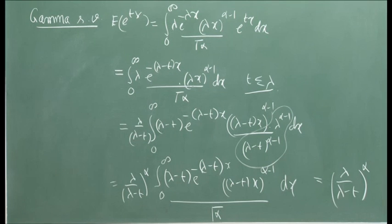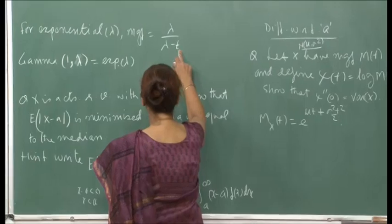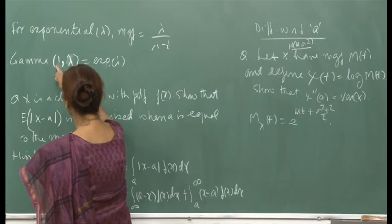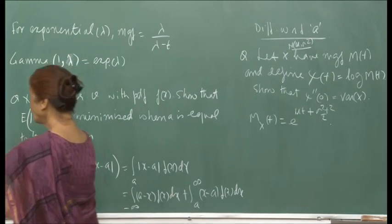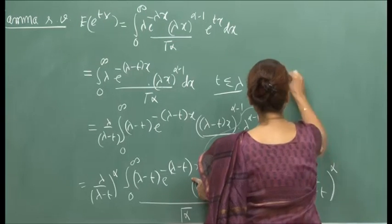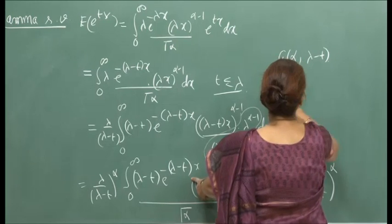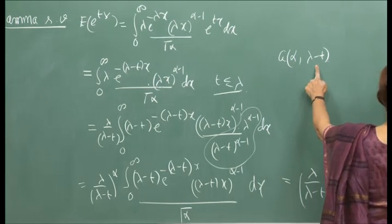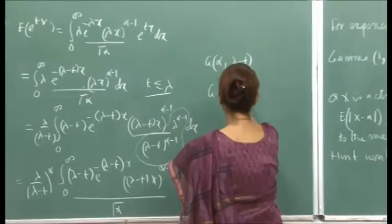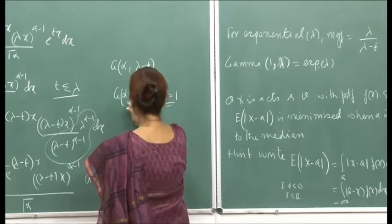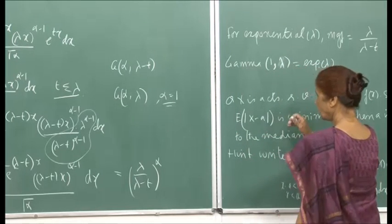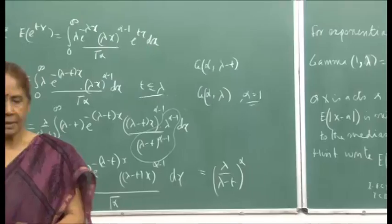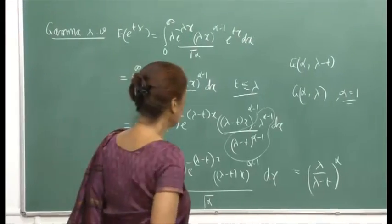For an exponential distribution, the MGF is λ/(λ−t), which matches Gamma(1, λ). There is an important connection to be developed: when we discuss jointly distributed random variables, the MGF of a sum of independent random variables is the product of their individual MGFs. Applying this iteratively, Gamma(α, λ) is the distribution of the sum of α independent exponential(λ) random variables, when α is an integer.